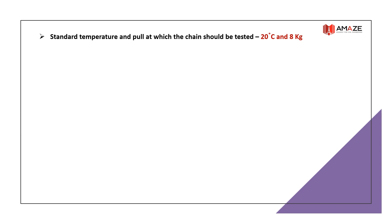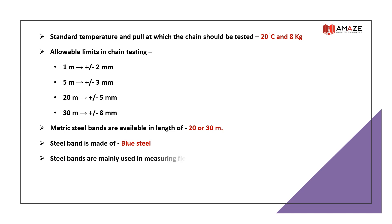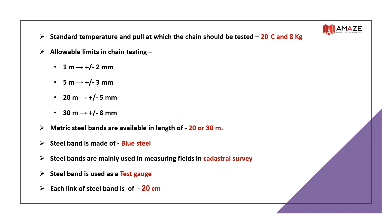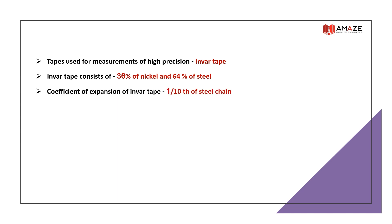The standard temperature and pull at which a chain should be tested is 20°C and 8 kg. Allowable limits in chain testing: 1 m ±2 mm; 5 m ±3 mm; 20 m ±5 mm; 30 m ±8 mm. Metric steel bands are available in lengths of 20 or 30 meters and are made of blue steel. Steel bands are mainly used in cadastral survey and serve as a test gauge; each link of a steel band is 20 cm. Tapes used for high precision measurements are invar tapes, consisting of 36% nickel and 64% steel. The coefficient of expansion of an invar tape is 1/10th that of a steel chain, and the degree of accuracy is 1 in 10,000.